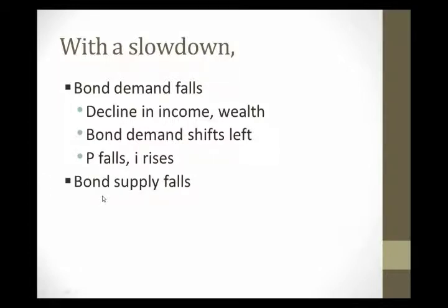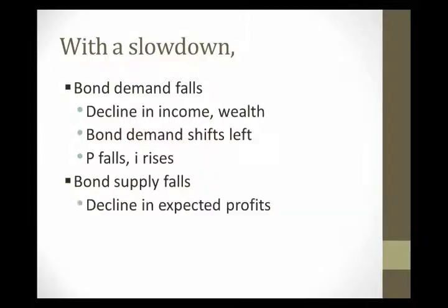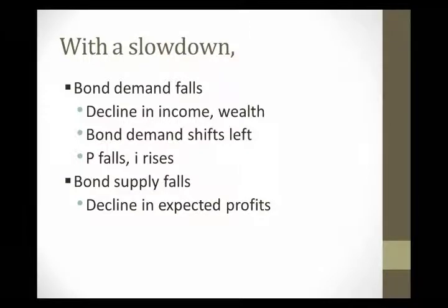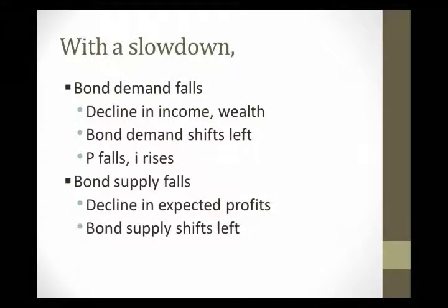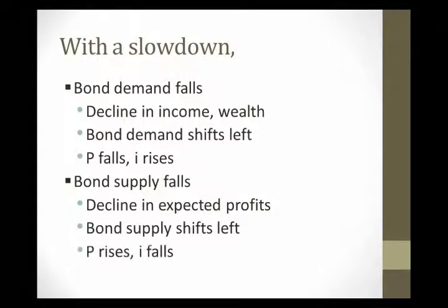On the supply side, bond supply would also fall and produce effects in equilibrium. Bond supply is going to fall because there's going to be a decline in expected profits with an economic slowdown. So borrowing for certain expansions might not be profitable — they won't do it — and bond supply will fall. Bond supply would shift left, and when supply shifts left, we get a bond price rise and an interest rate fall.